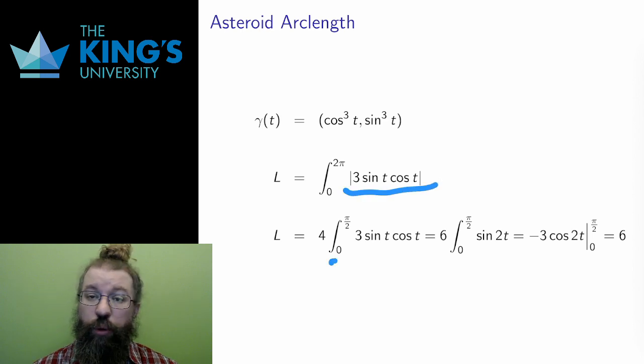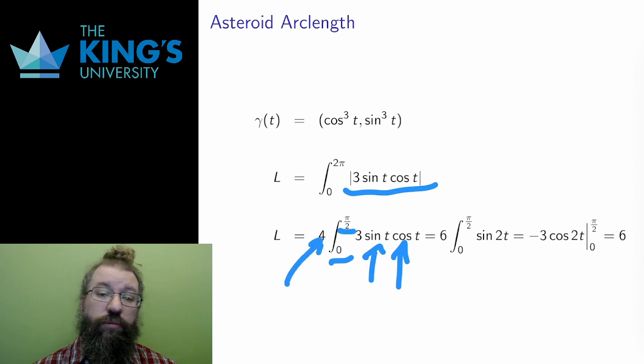In the first quadrant, both sin and cos are always positive, so I can just drop the absolute value. When I do that, multiplying by 4 since I'm only calculating 1 quarter of the length, I get a doable integral. The antiderivative here is sin 2t, and evaluated on the bounds gives an arc length of 6.